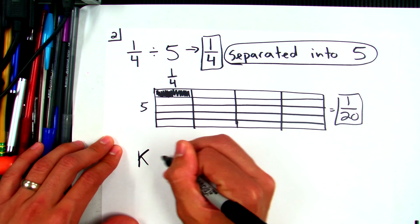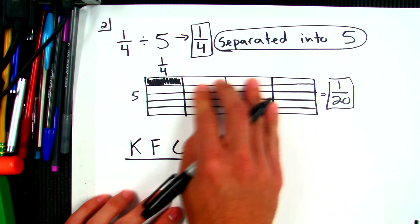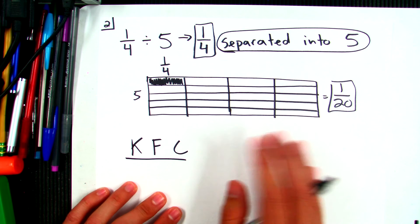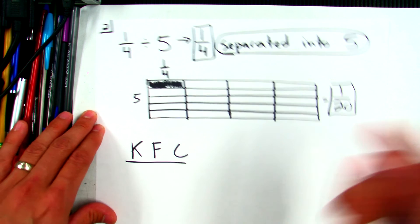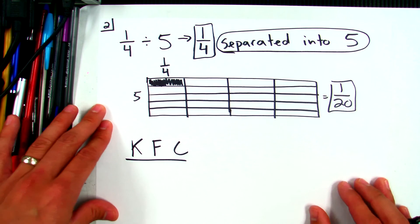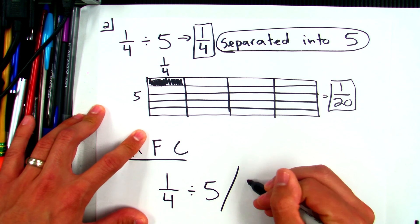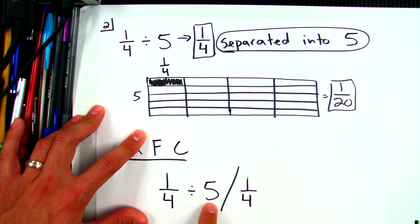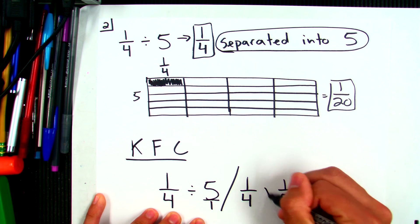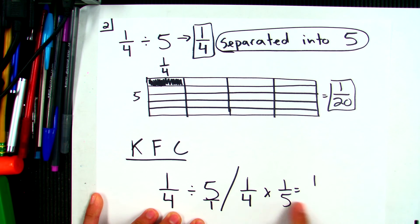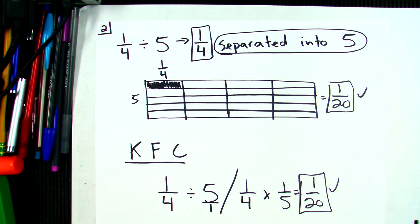You have to remember it's one piece out of the whole thing — count the whole thing. And remember: if I have 1/4 and I'm splitting it into 5, my fraction has to be smaller than 1/4, and 1/20 is smaller than 1/4. Now let's do it the KFC way — probably the fastest way to solve. I have 1/4 divided by 5. Keep the first fraction, flip the second — 5 over 1 becomes 1 over 5 — and change the operation to multiplication. Multiply across: 1 times 1 is 1, 4 times 5 is 20. We get the same answer: 1/20.